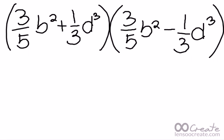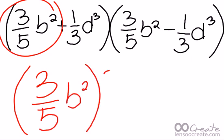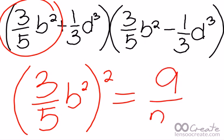Now you may want to start off by squaring the first term which is 3 fifths b squared. And you will come up with 9 twenty-fifths b raised to the 4th power.